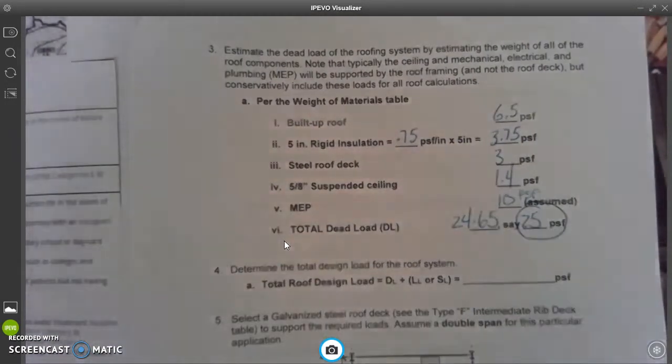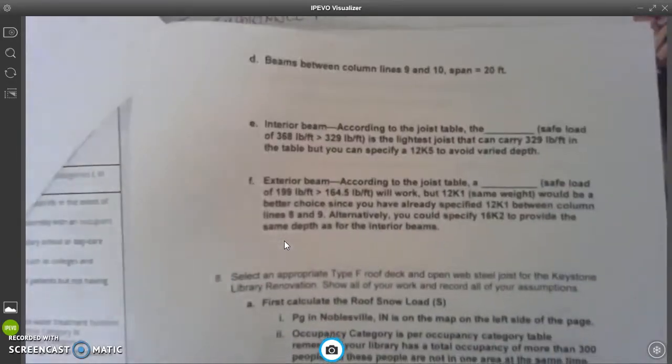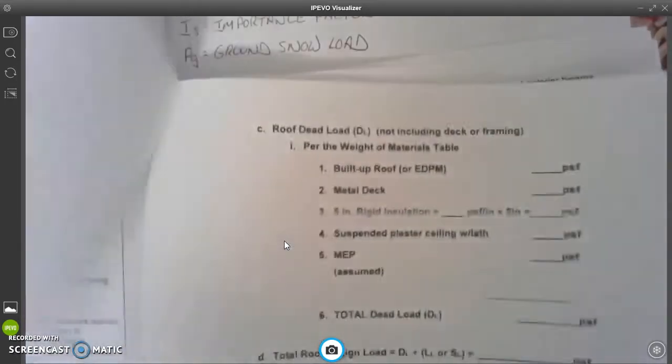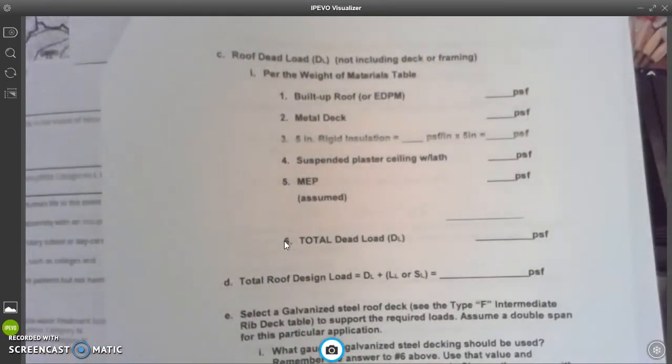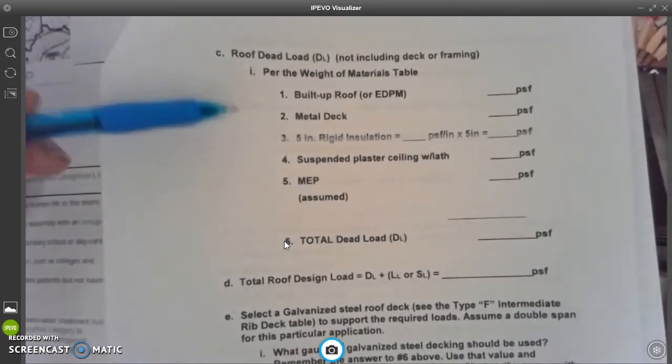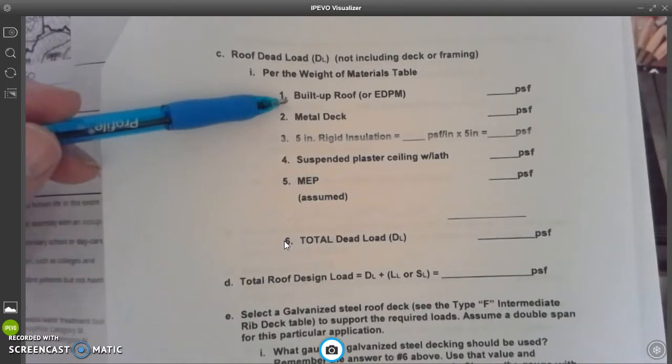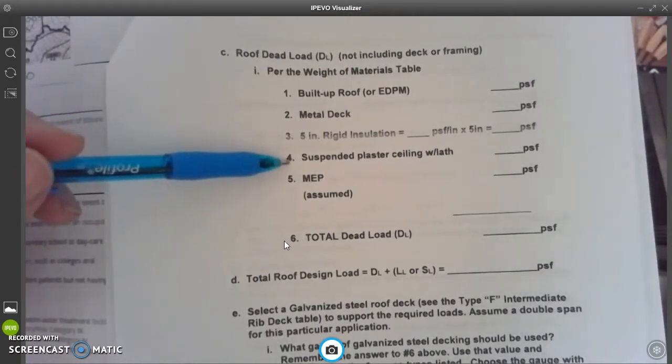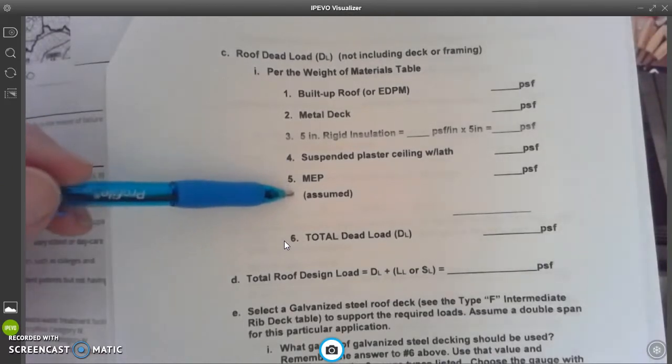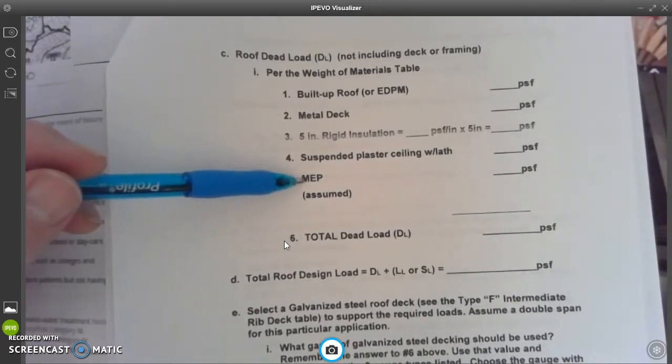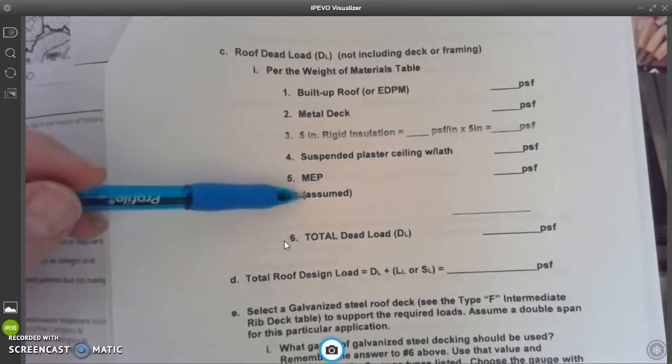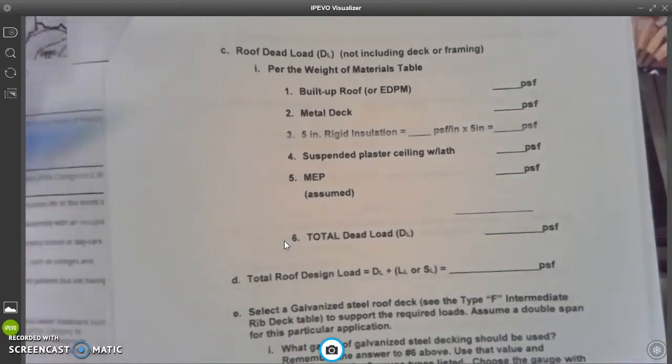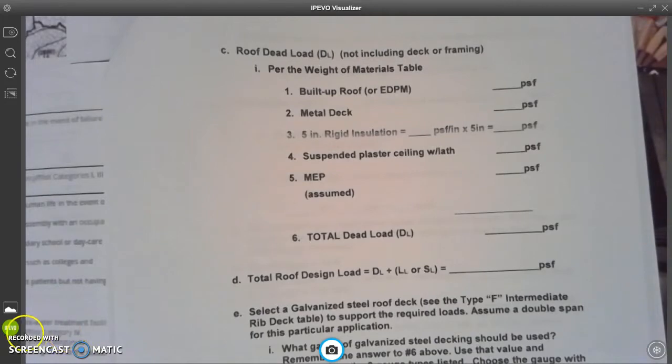Now your job is to go to question 8. So I'm going to flip to question 8. Right now I'm on 8. I'm going to go to the next page. Oops, went too far. There we go. So this is 8C. You'll see it right here, 8C. And you're going to do the same thing. You're going to look up the roof material and its weight for a built-up roof or EPDM, metal deck, 5 inches of rigid insulation, the suspended plaster ceiling with lath. This is different. This is MEP, and this is going to be the same value as we used in problem number 3. Assumed got put down here. It should be over at the other end, but that's okay. Then you're going to add all of those up and you're going to come up with a value down here.